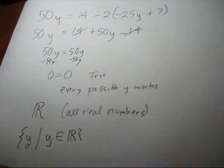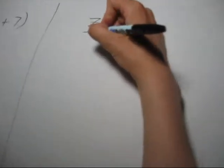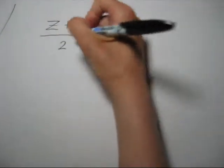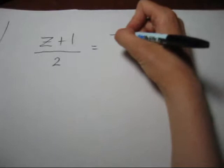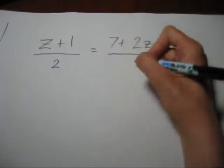Okay, let's do another trick one. We've got z plus 1 over 2 equals 7 plus 2z all over 4.